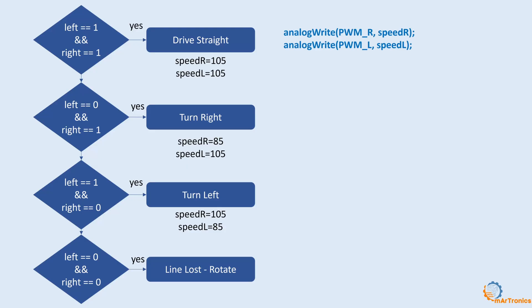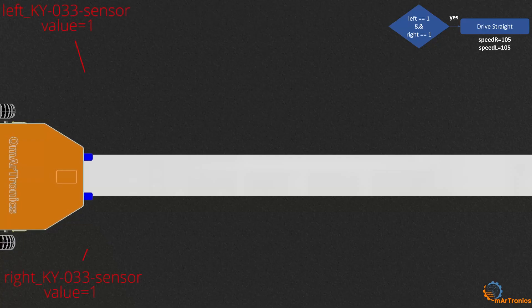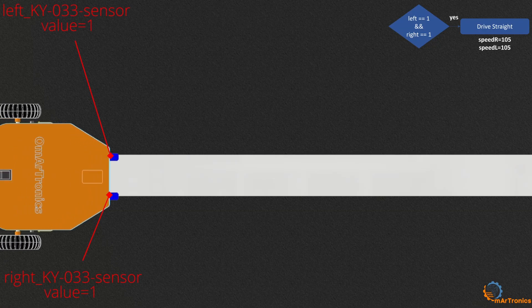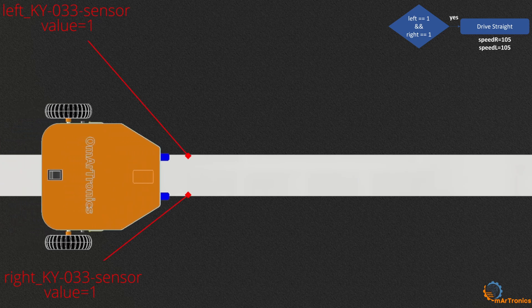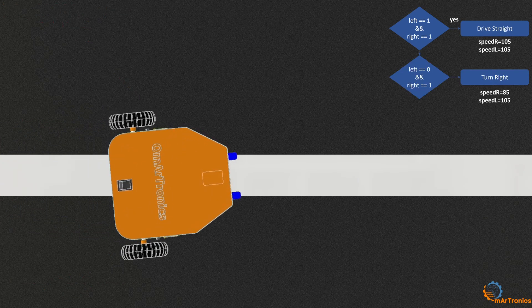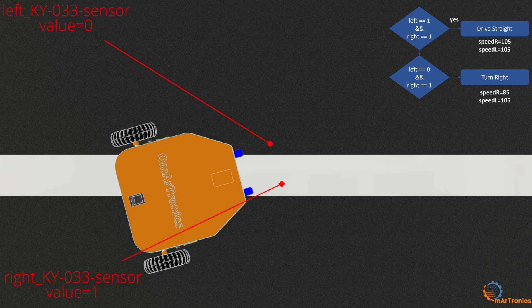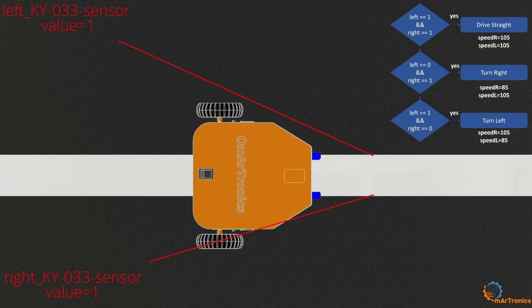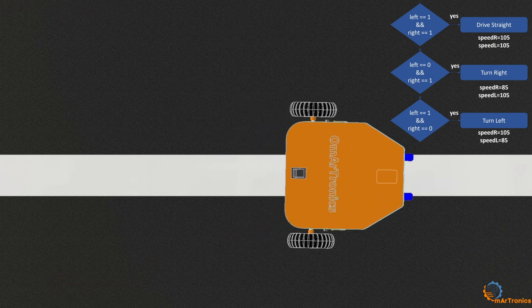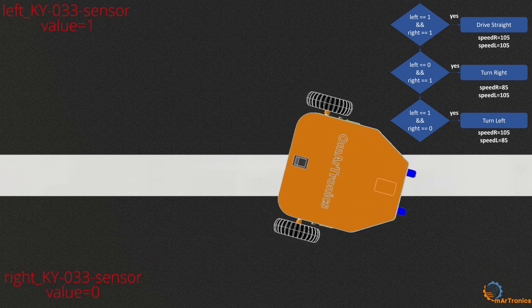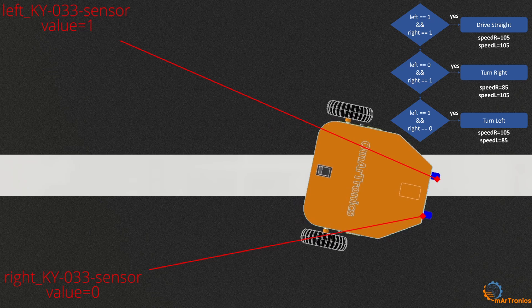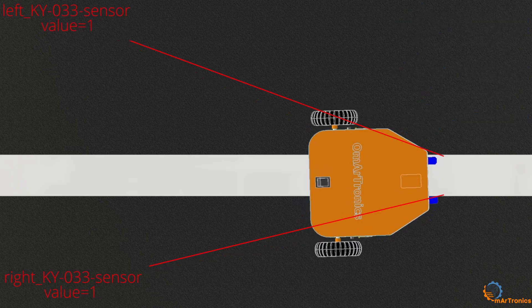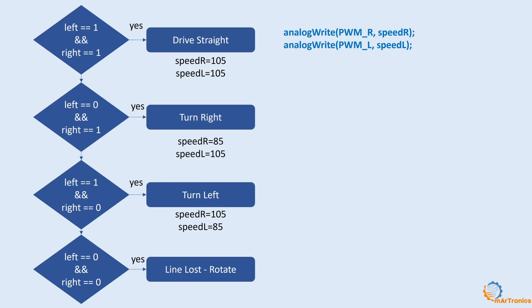After explaining how the sensor works, I will now explain how to combine two sensors to control the robot's movement to follow the line. If both sensors are on the line, it means both sensors give a value of one, so the robot moves forward at a speed. If the line is detected only by the right sensor, the robot turns to the right by moving the left motor at a higher speed. If the line is detected only by the left sensor, the robot turns to the left by moving the right motor at a higher speed. If both sensors lose the line, the robot keeps turning until it finds the line again.